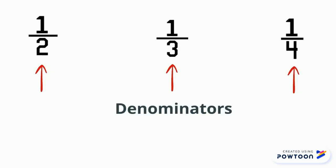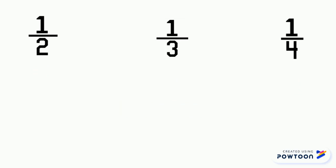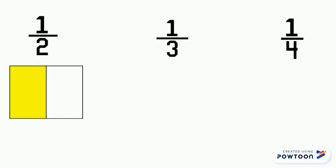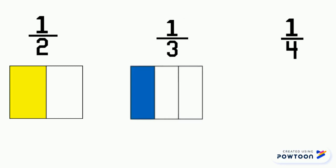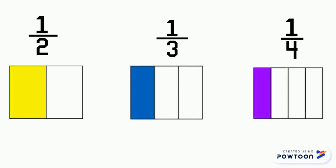Let's look at a few different unit fractions to see what the denominator is telling us. Here we have one half, one third, and one fourth. They all have the same numerator, one, but different denominators.